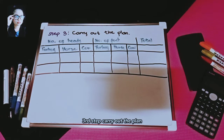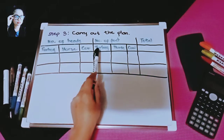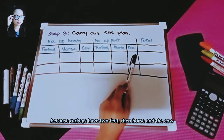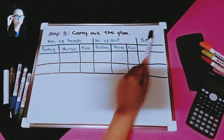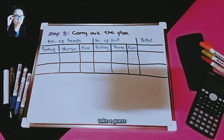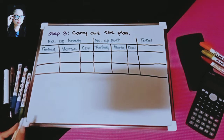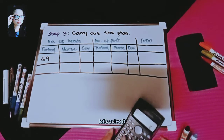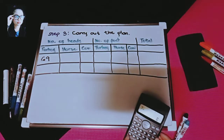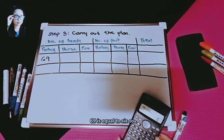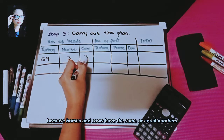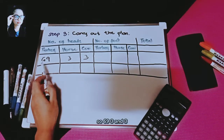Step three: carry out the plan. Our table has columns for the number of heads, number of feet for turkeys (times 2), horses and cows (times 4), and the total. We take our first guess of 69 turkeys. Since the total animals is 75, that leaves 6, split equally: 3 horses and 3 cows.